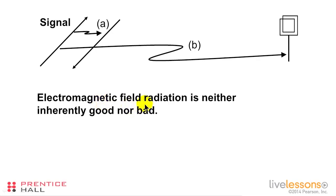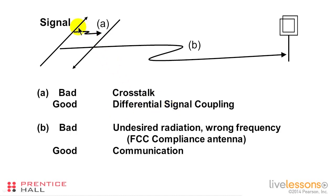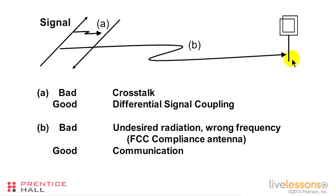The electromagnetic field is neither inherently good nor inherently bad. If it radiates into an adjacent trace and creates crosstalk, that's bad. But if the adjacent trace is part of a differential pair, then differential signal coupling is good. If the signal radiates out into an antenna at the FCC compliance testing range, that's bad. But if the antenna is in a radio or TV set and we are exercising communication, that's good. That's what electromagnetic radiation is all about.